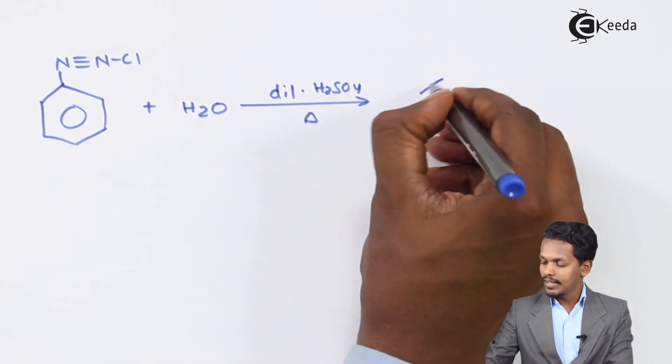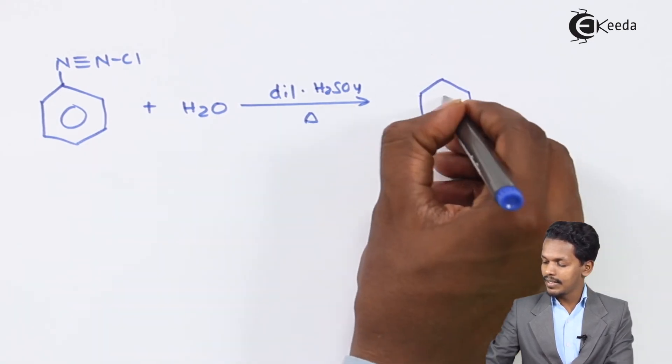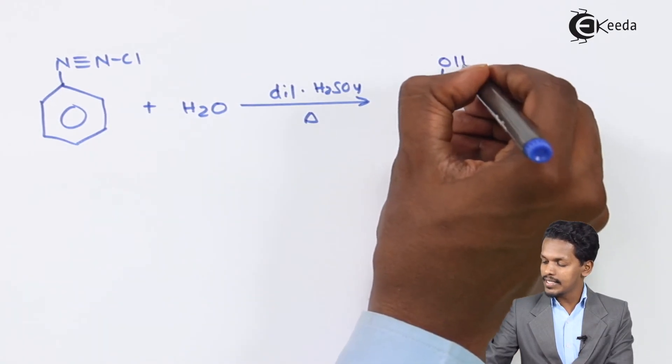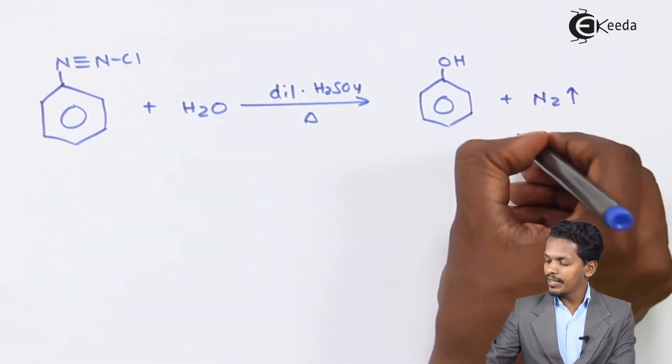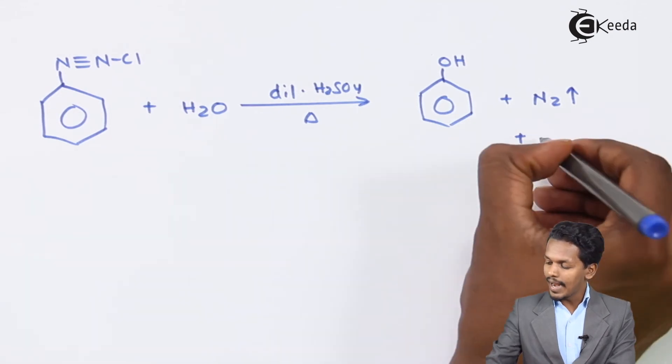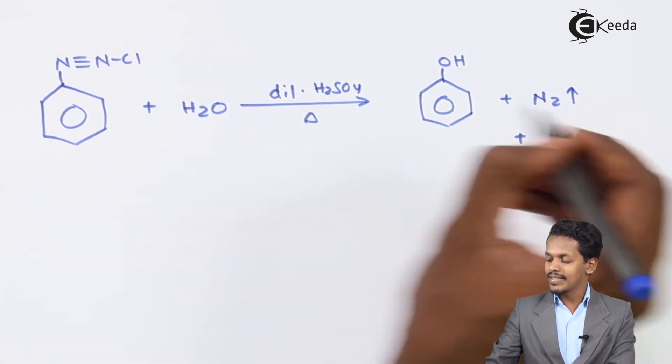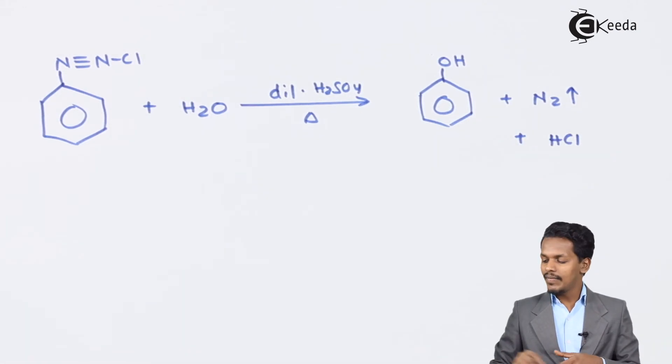Therefore the product that we get is phenol, which is the main thing we need. The N2 will be evaporated or released from the reaction, and the by-product we get is HCl. So in this case we have got phenol.